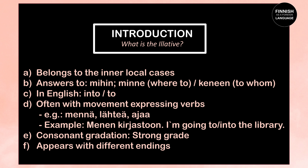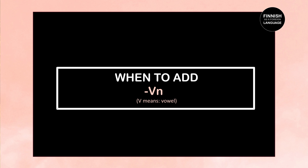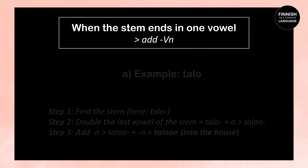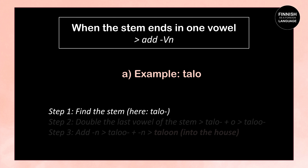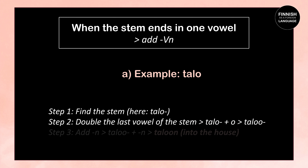One of the possible illative endings is the vowel+N ending. When the stem of a word ends in one vowel, we add the vowel+N ending. For example, talo means house. In the first step we find the stem, which is also talo. In the second step we double the last vowel of the stem: talo + o = taloo. Then in the third step we add the letter N: taloo + N = taloon, meaning to or into the house.